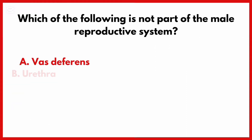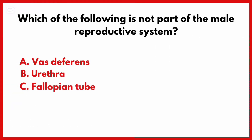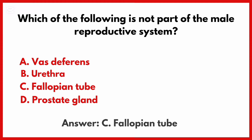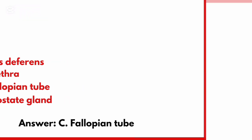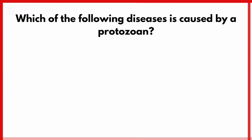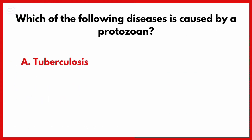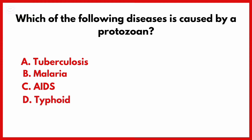Which of the following is not part of the male reproductive system? Correct answer is option C: Fallopian tube.